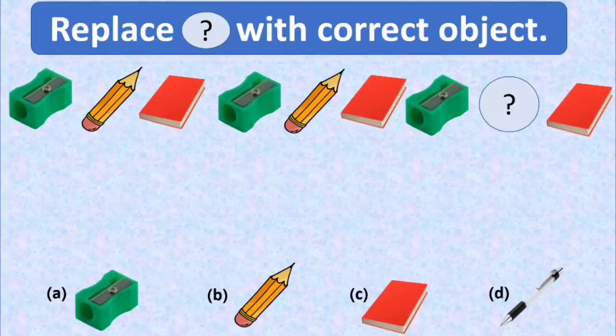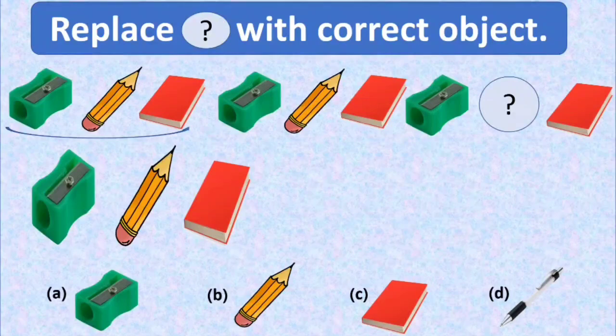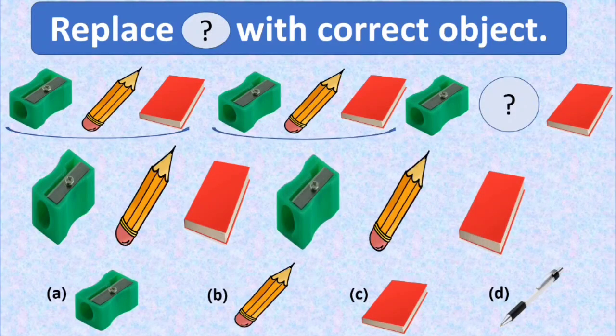Let's look at the pattern carefully students. A sharpener, a pencil, and a book. Then again, the same group is repeated. The first thing is sharpener, then the pencil, and then a book.